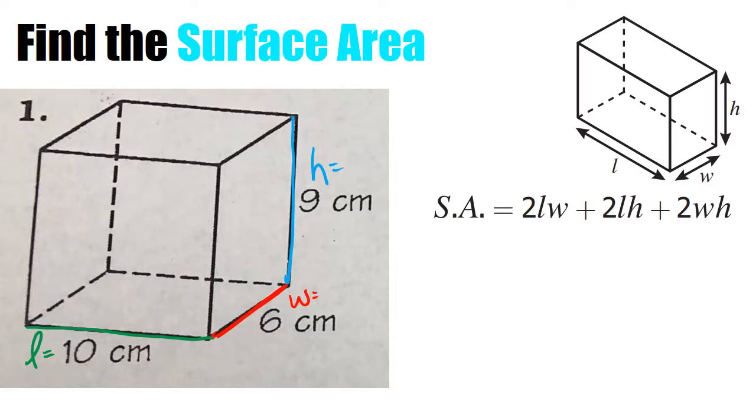So what I'm going to do is I'm going to do one part at a time. So I'm going to do this part first, the 2 times the length times the width. So I'm going to do 2 times my length is 10 times my width is 6. So what that's going to do is 2 times 10 is 20. 20 times 6 gives me 120. So you see, I did the first part.